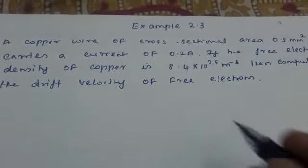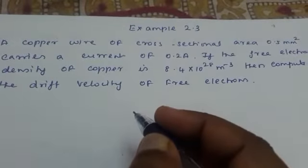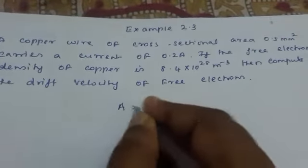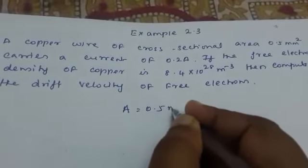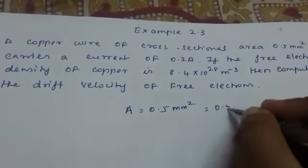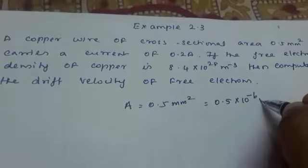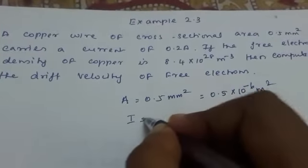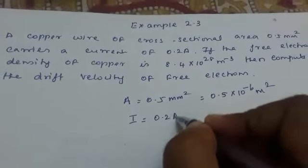What is given in the problem is a copper wire with cross-sectional area 0.5 mm², which can be written as 0.5 × 10⁻⁶ m². It carries a current of 0.2 ampere.